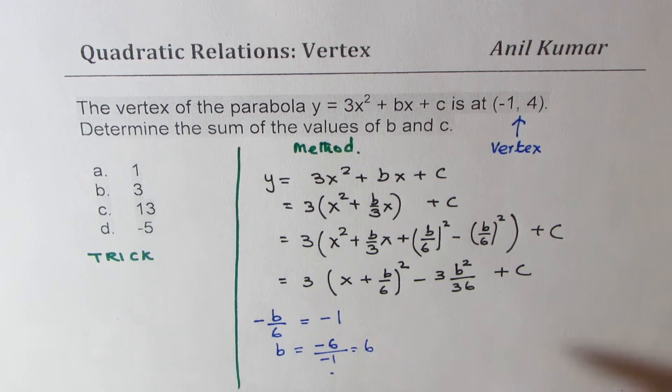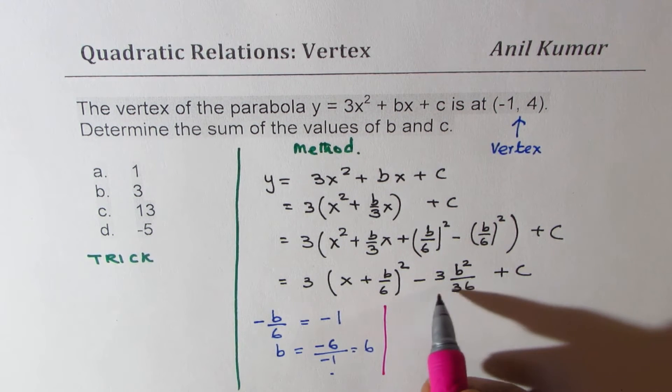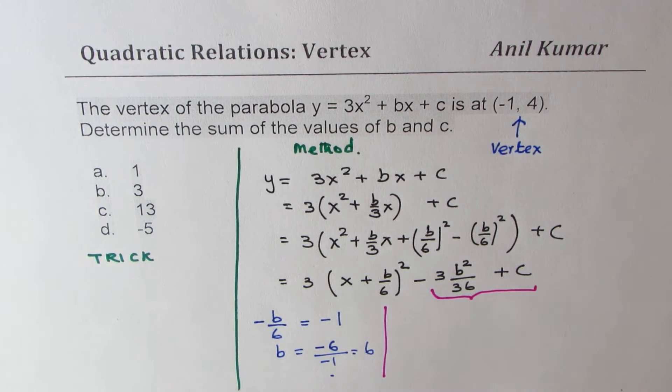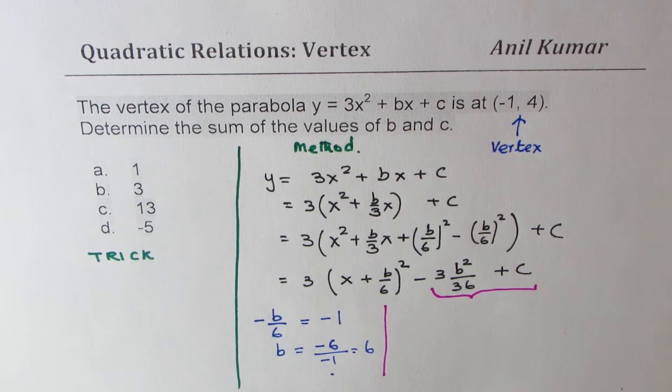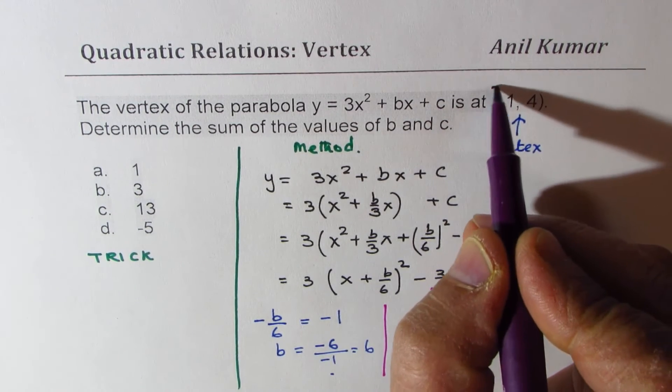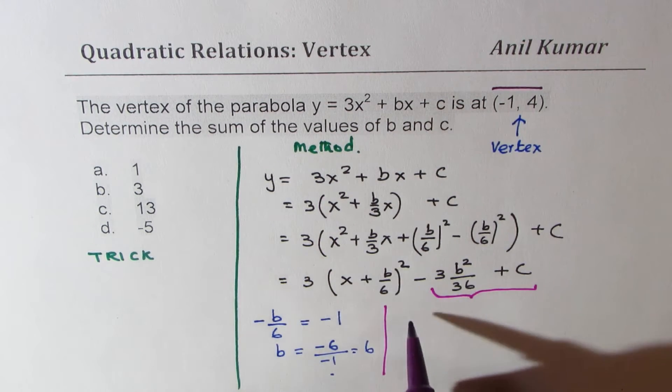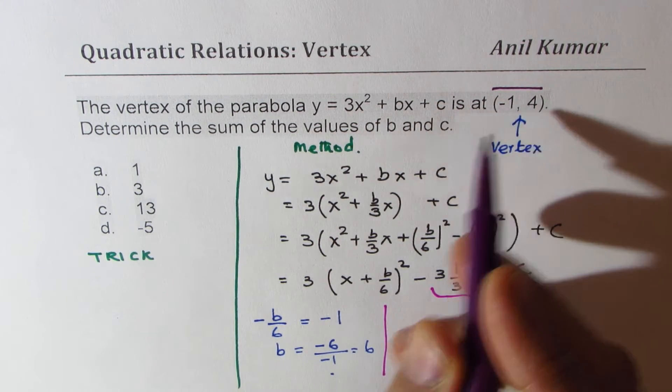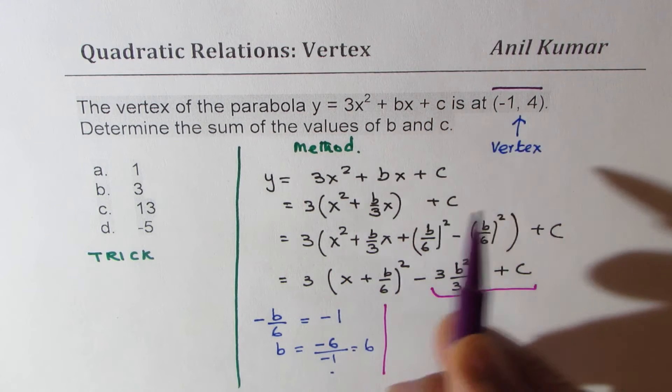You can actually substitute the value of b here and get all this. Alternately, at this stage, what you can also do is note this point, the vertex, is on the graph. So substitute minus 1 here and the value of y should be 4. We can find c like that.